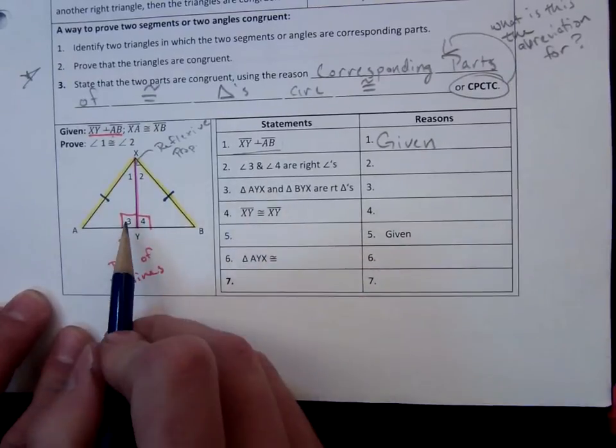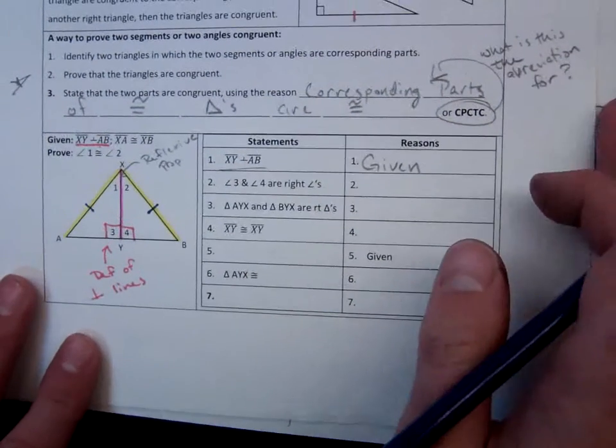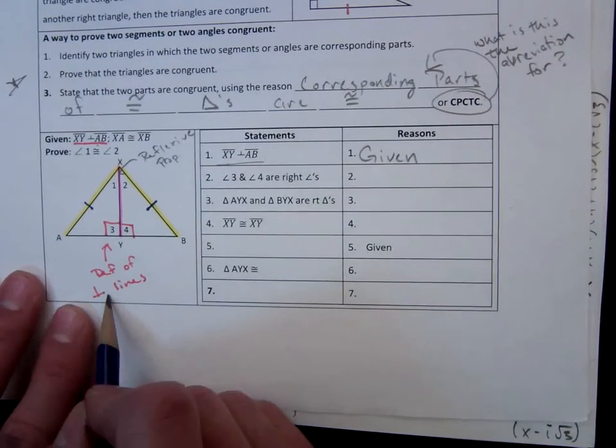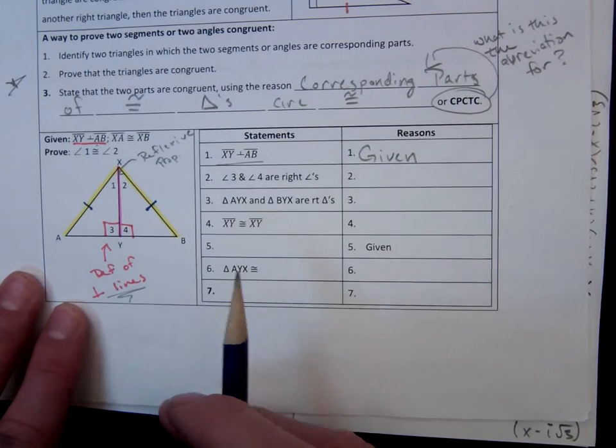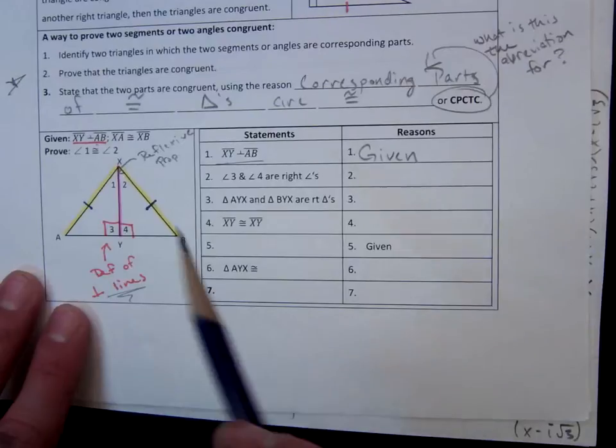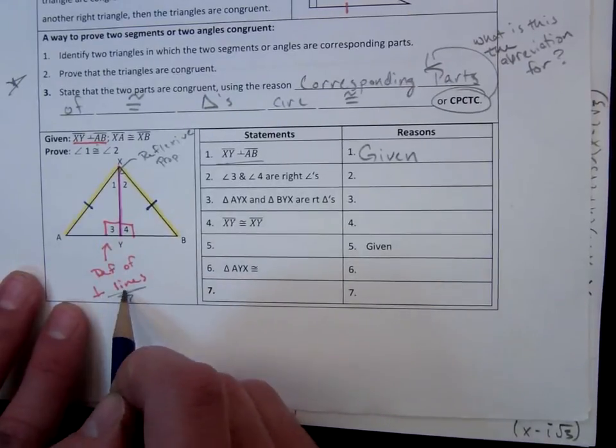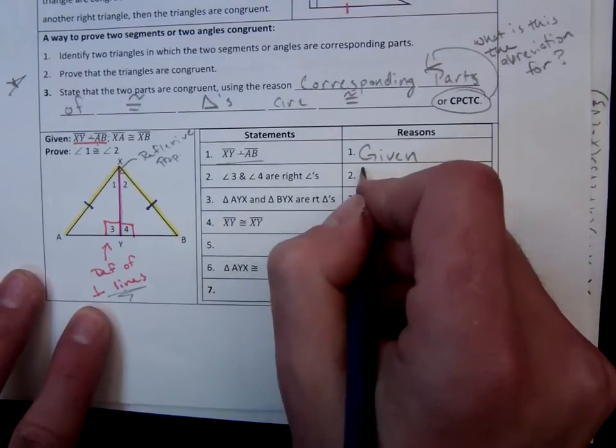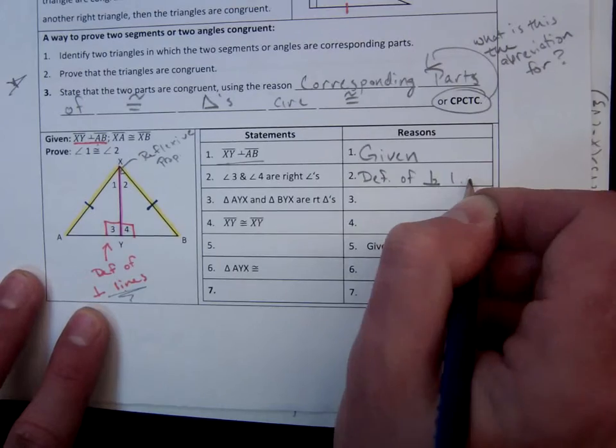Now, the next statement they state is that angle 3 and angle 4 are right angles. Now, like I had said, this is a statement that you do need to make, even though it seems very obvious. Right? If they're perpendicular, of course they're right angles. That's the definition of perpendicular lines. And that's our justification, the definition of perpendicular lines.